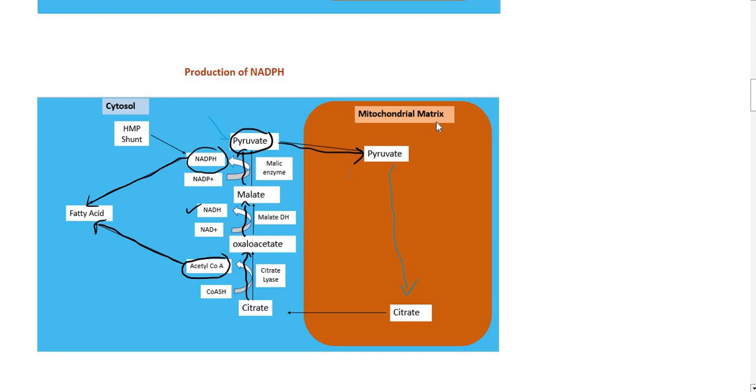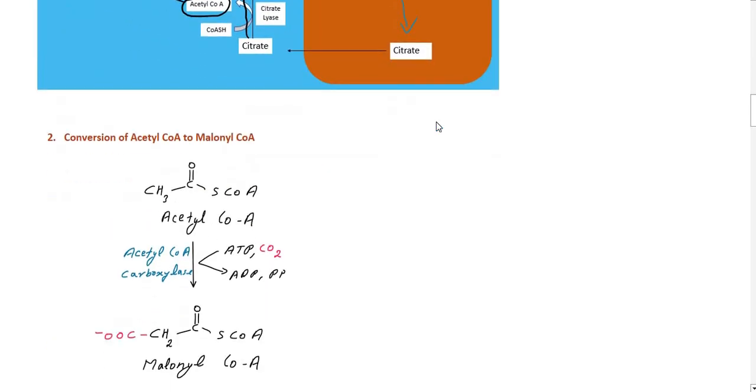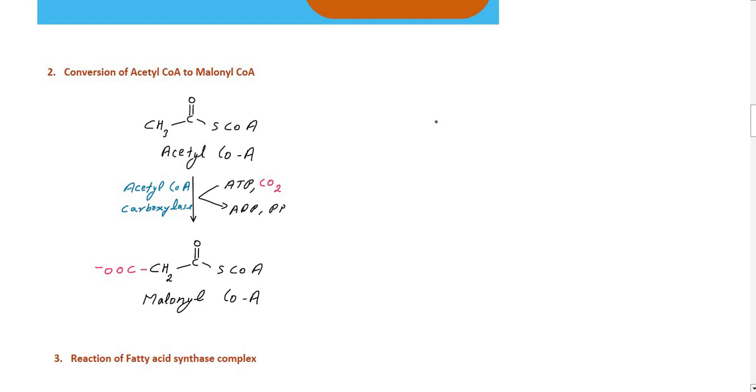Now, for the first committed step: acetyl-CoA is converted to malonyl-CoA. The enzyme acetyl-CoA carboxylase adds a carboxyl group to acetyl-CoA to form malonyl-CoA (CH3-CO-S-CoA becomes HOOC-CH2-CO-S-CoA). This is the regulated step in fatty acid synthesis.